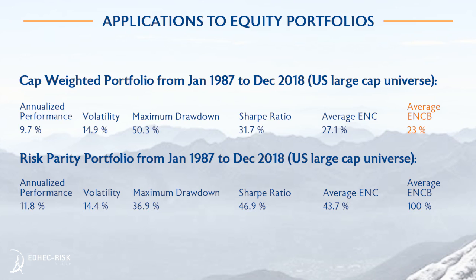If we switch to the exact same universe but with risk parity weights, we find a higher performance of 11.8% — about 200 basis points higher. We find about the same, actually slightly lower, volatility. We find a much better max drawdown of 36.9% as opposed to 50%. We find a higher Sharpe ratio, which is not surprising given better performance and lower volatility. We also find a more balanced portfolio in terms of dollar allocation at 43.7%, and by construction, the effective number of correlated bets is now equal to 100%, as it must be for the risk parity portfolio.